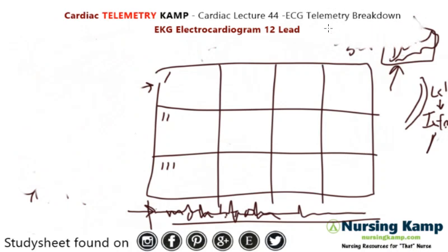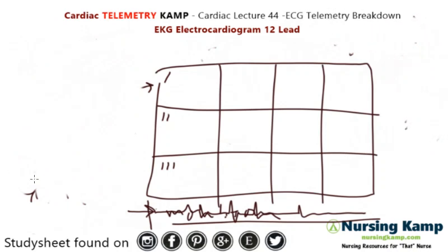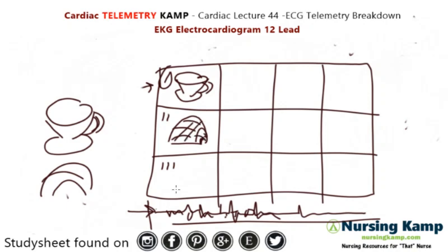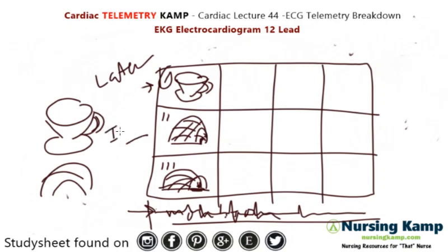I always think: first thing in the morning, I like a cup of coffee — so that's lateral. Lead one is a lateral lead. Because I like coffee in the wintertime, I put an igloo here — that's an inferior lead. Because it's a real cold winter, I put another igloo down here, so we have another inferior lead. So: lead one is a lateral lead, lead two is an inferior lead, and lead three is an inferior lead. That is telemetry.